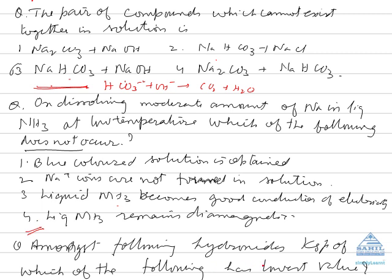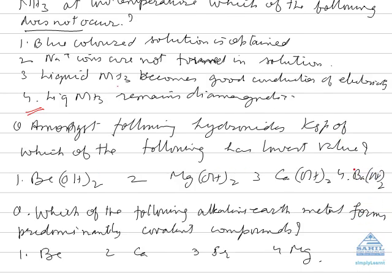Amongst following hydroxides, Ksp of which of the following has lowest value? Now we are shifting from alkali metals to alkaline earth metals. Alkaline earth metal belongs to group 2. As the name indicates, alkaline means they are alkali-like.